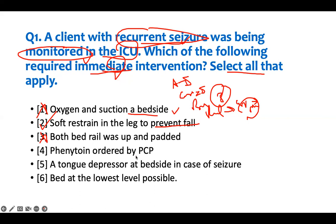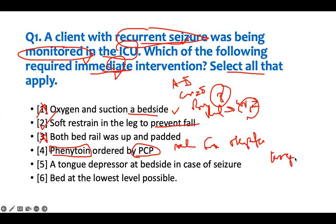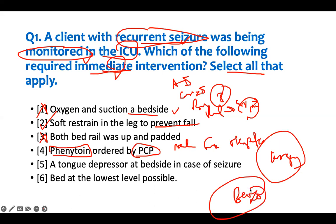'Phenytoin ordered by the PCP.' This is a tricky one. This seizure medication is for maintenance and can take about six weeks to be therapeutic. You have to know this medication cannot be used in acute seizure. For someone who keeps having seizures, you give a benzodiazepine like lorazepam — something short-acting. So in the answer choice, look for a benzo for a patient who is actively seizing. These medications take a while to get into the system, so we need to question this order and intervene right away.